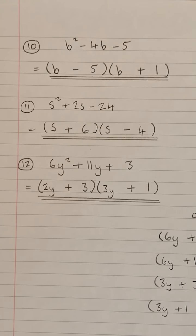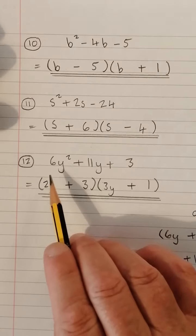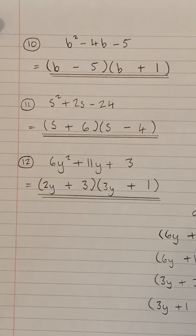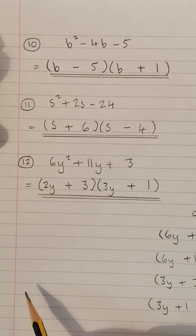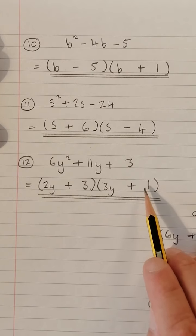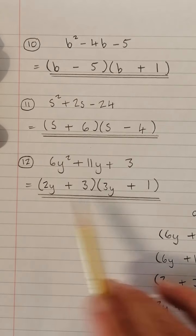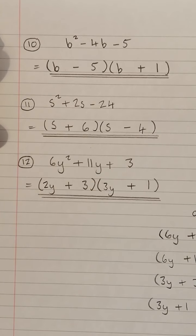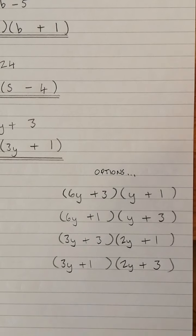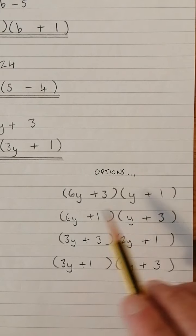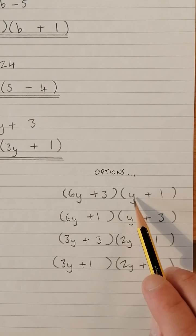Probably the most difficult one is question 12. What makes it difficult is that we have a 6 in front of the Y². So we have to have two things that multiply to give 6Y², two numbers that multiply to give you +3. But when you multiply it all out, you want +11 in the middle. Just as you can see, here are all the options that you could have chosen there.